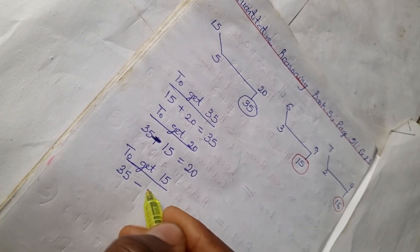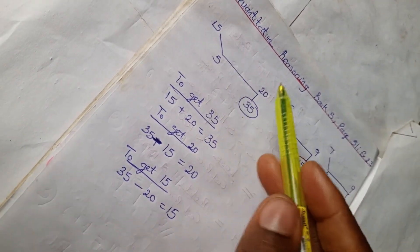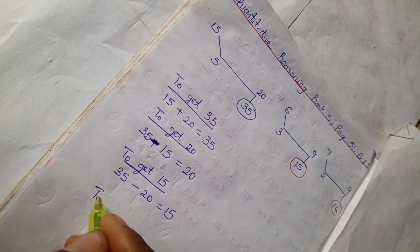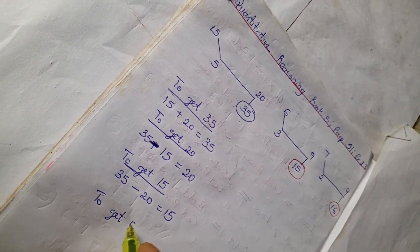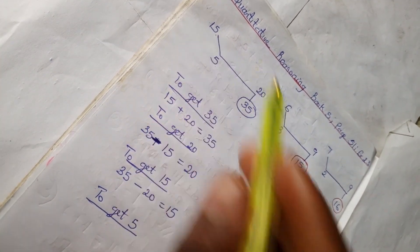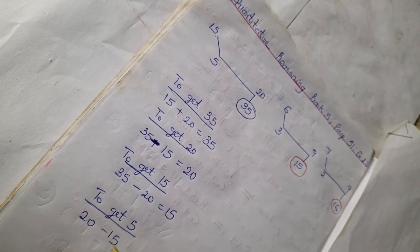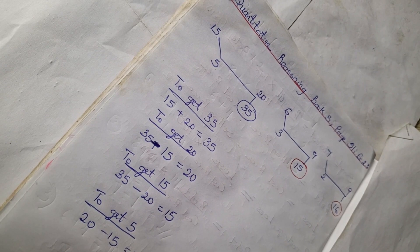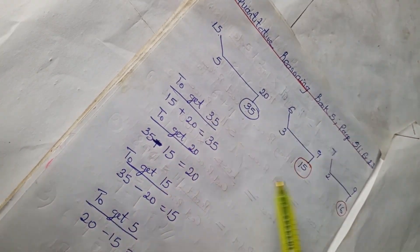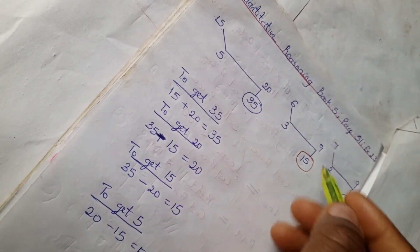So we've used this to get the others. Now to find 5, we have 20 minus 15 is 5. You can also get 20 using 15 plus 5 is 20. Don't forget to subscribe to this channel.